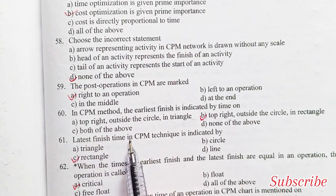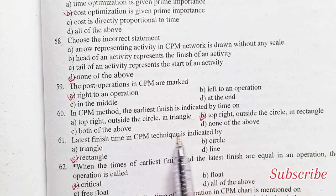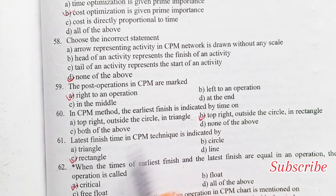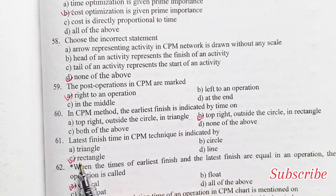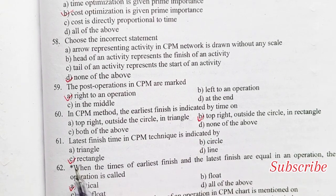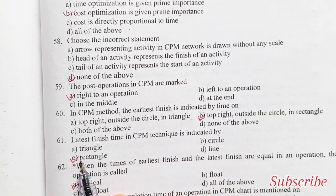Latest finish time in CPM technique is indicated by: triangle, circle, rectangle, or line. Option C is the right answer — rectangle.